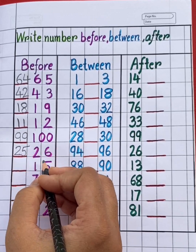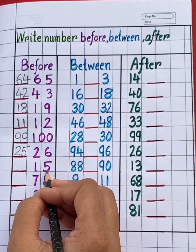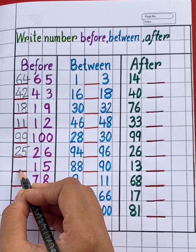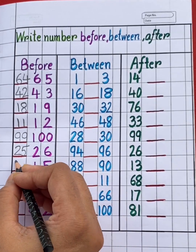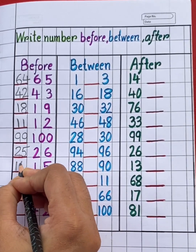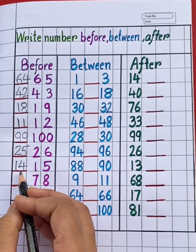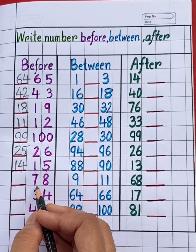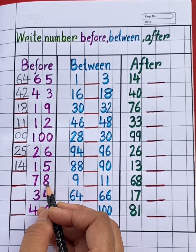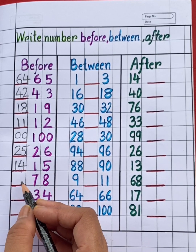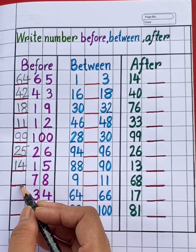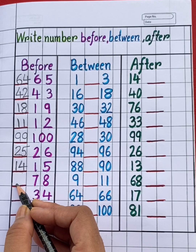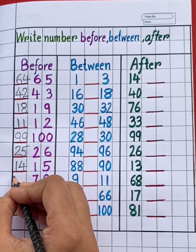Next number is 15. Which number will come before 15? Yes, before 15 is 14. Next number is 78. Now tell me students, which number will come before 78? 77.